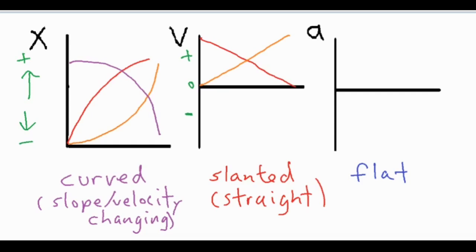For the next one, we want to come down on the graph except start off sort of fast and then become more and more flat — that would be slowing down in the negative direction. Remember, the rule for showing speeding up or slowing down on a velocity versus time graph isn't a positive or negative slope. That's a common misconception, because a negative slope here being slowing down is a more intuitive answer, but if you want to show something slowing down in the negative direction it's actually going to be a positive slope.